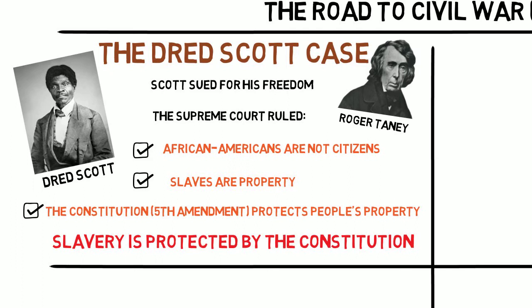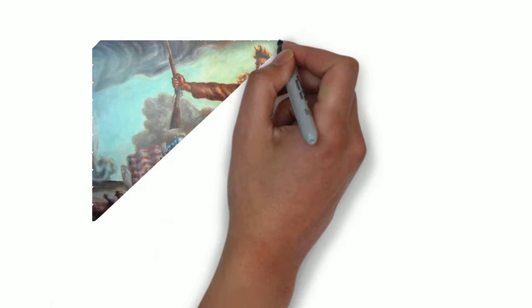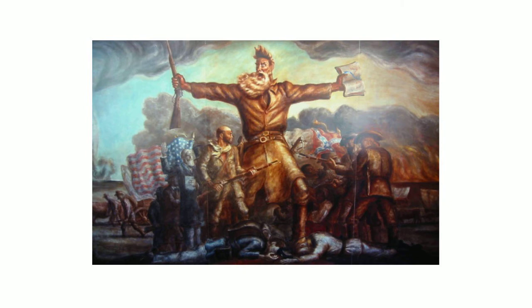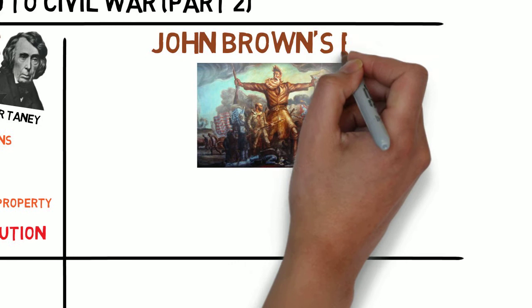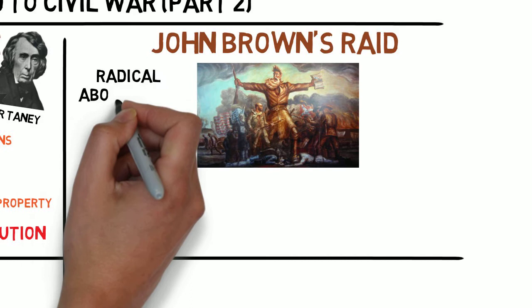This decision outraged abolitionists throughout the country and caused further division between the North and the South. One of those abolitionists who was outraged by the Dred Scott decision was a man named John Brown. John Brown was a pretty extreme abolitionist — in fact, you could say that he was a bit radical. He was in Kansas during the violence of Bleeding Kansas, and it is believed that he and his sons were responsible for a few murders there.